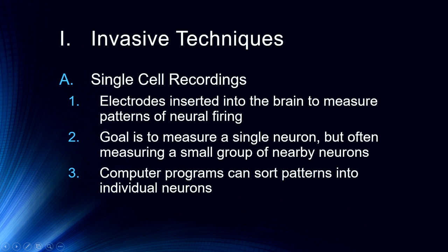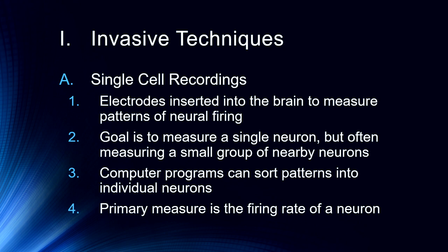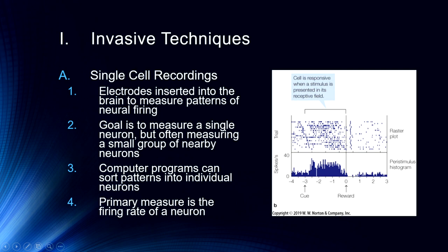Fortunately we have computers, which can sort patterns of firing into individual neurons and identify the pattern of functioning from a single neuron based primarily on the amplitude of the signals. This allows the computer to determine which signals are from nearby neurons versus further away — the closest neuron will have the highest amplitude. The primary measure in this type of technology is the firing rate of a neuron, which will become very important when we move into talking about visual perception.